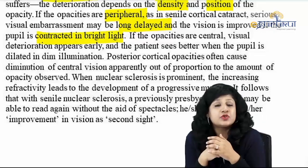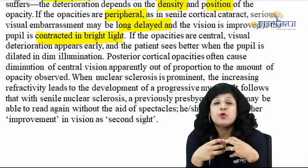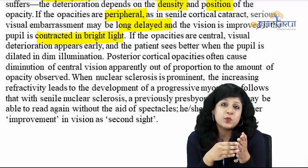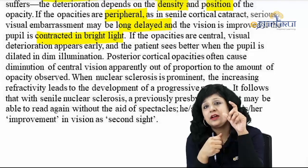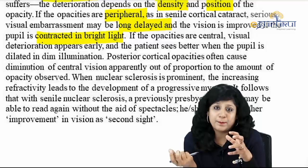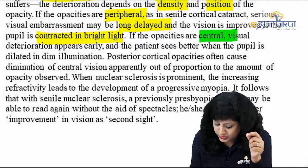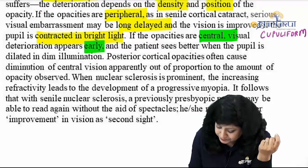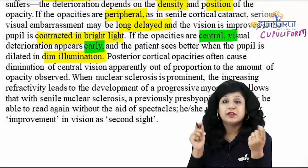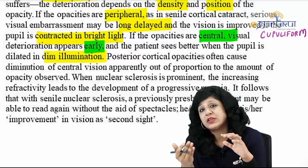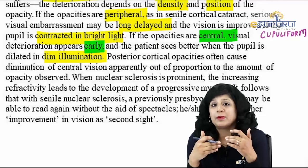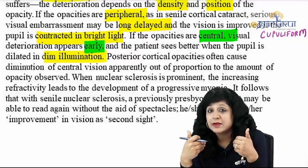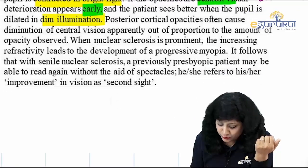In peripheral opacities there is clumsy vision in dim light because the pupil dilates and rays pass through opaque areas. If opacities are central, visual deterioration will be early — as in cupuliform cataract — and the patient sees better in dim light when the pupil is dilated. In bright light the pupil constricts and the entire visible area is opaque. Posterior cortical opacities cause diminution of central vision apparently out of proportion to the amount of opacity observed.